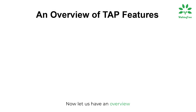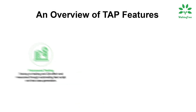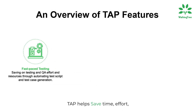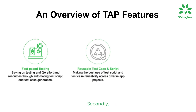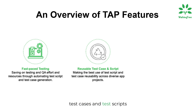Now let us have an overview of key TAP features. TAP helps save time, effort, and resources by automating test scripts and test case generation. Secondly, TAP helps in reusing similar test cases and test scripts across projects to speed up test execution further.